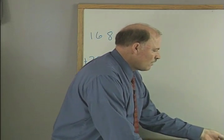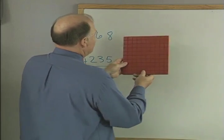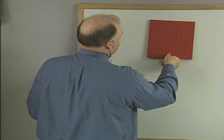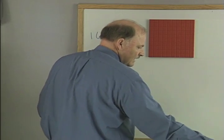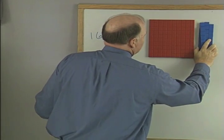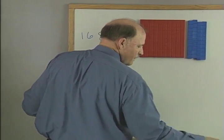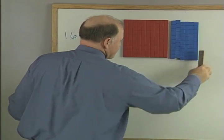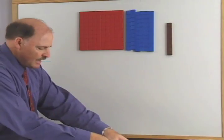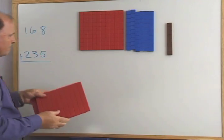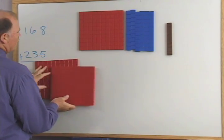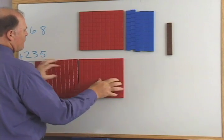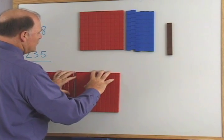Now we're gonna do some hundreds. We're gonna say 168 plus 235. Okay, so I'm gonna build this one: 168. And here I'm gonna have 200... I think I'm gonna lower these a little bit. 235.